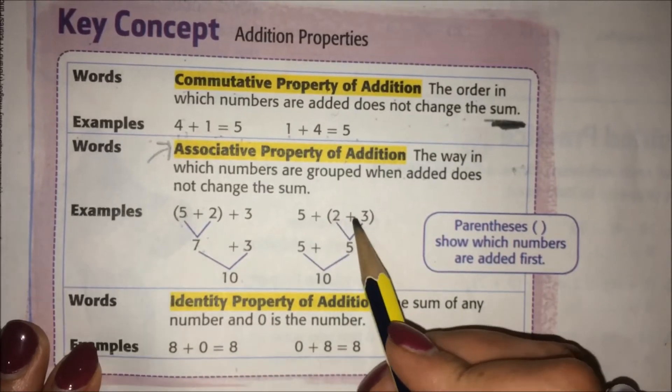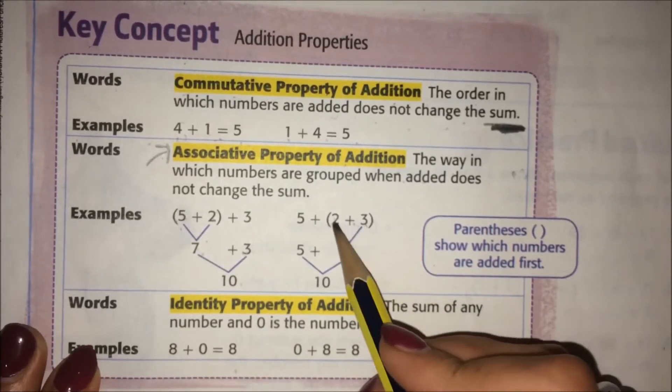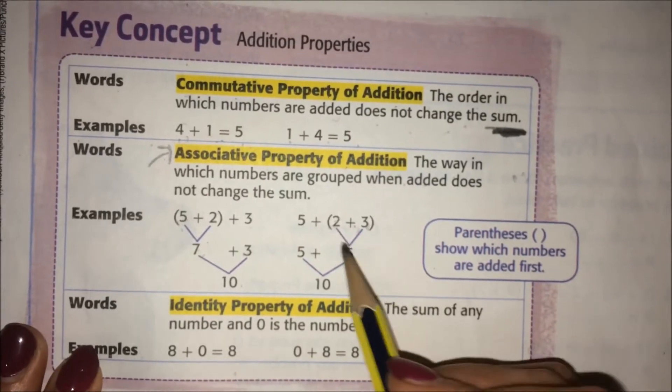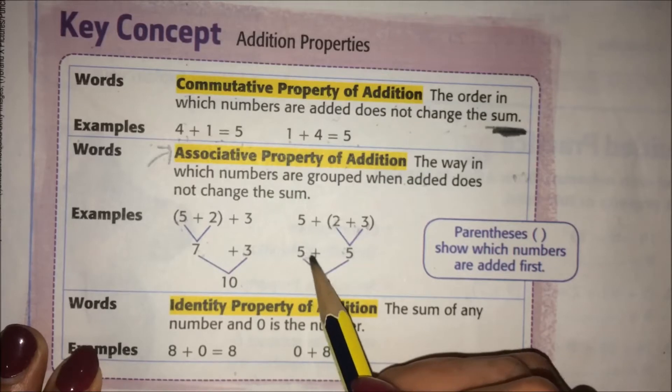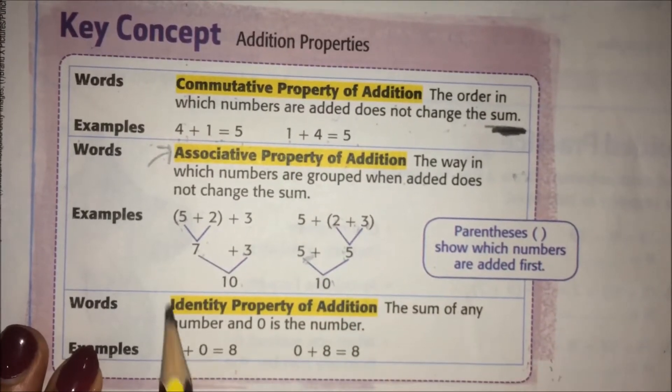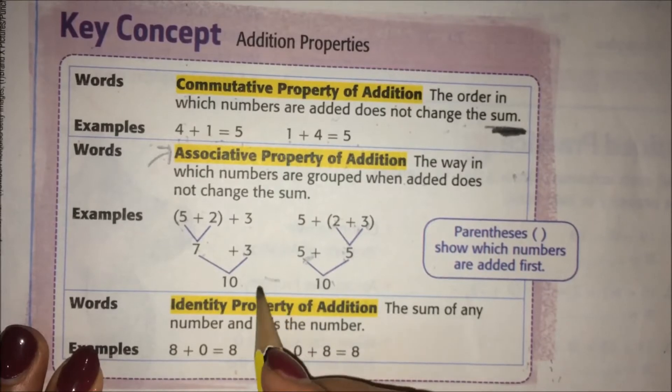Over here, these two numbers are associated. You add inside the parentheses first. So 2+3 equals 5, and then you add this last one, the 5. Five plus five is ten. Either way, you still get ten.